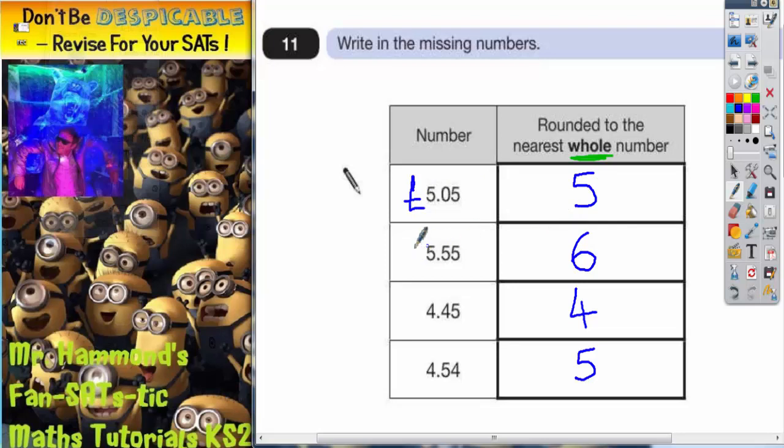Let's think of this one the same way. 5 pounds 55, that would be closer to 6 pounds. 4 pounds 45 would be closer to 4 pounds. And 4 pounds 54 would be closer to 5 pounds. So we're just checking there that we've got them correct. That was good.